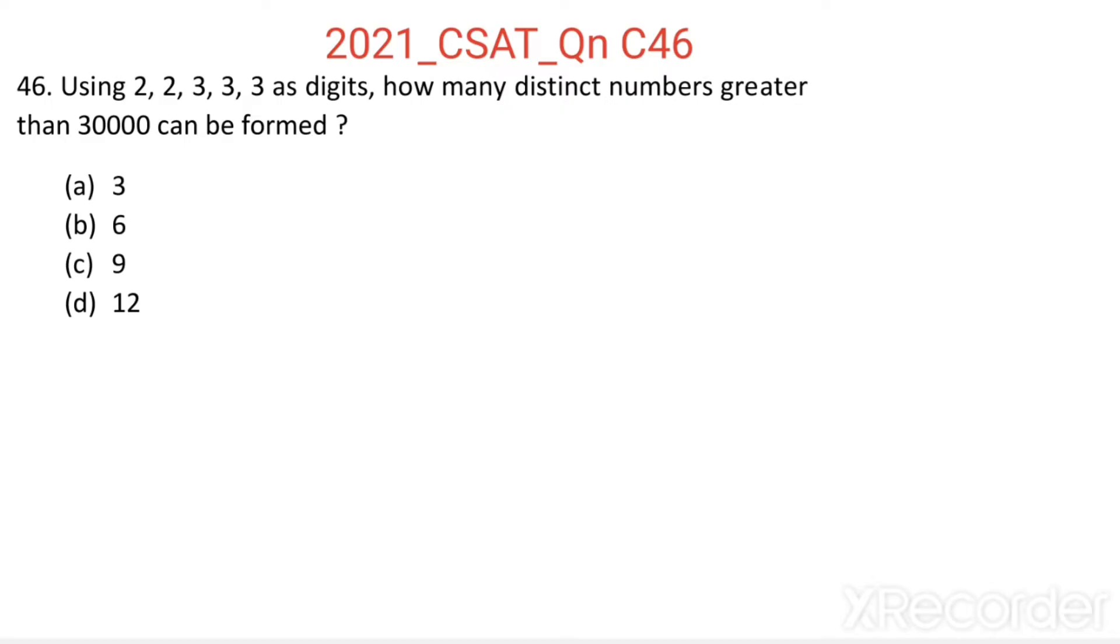Here we need to find how many distinct numbers greater than 30000 can be formed using these given 5 digits. 30000 is a 5-digit number, so here we need to find distinct 5-digit numbers using these 5 digits.